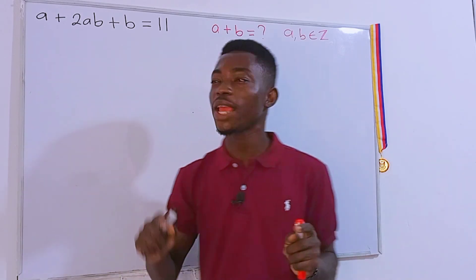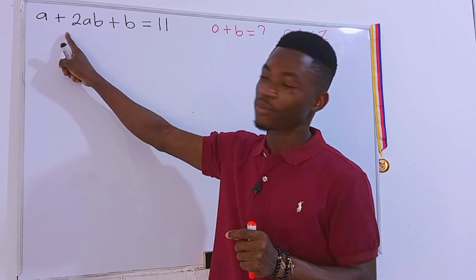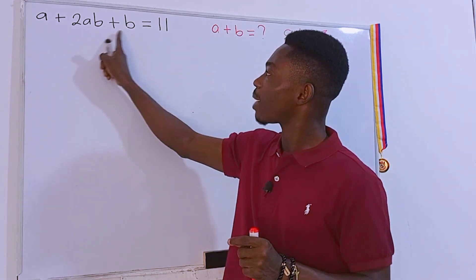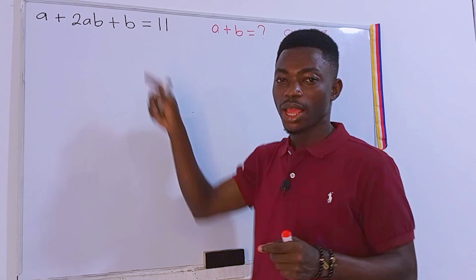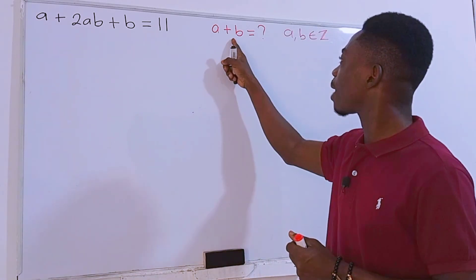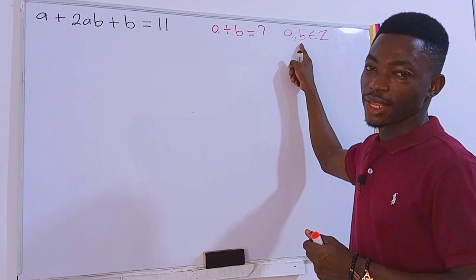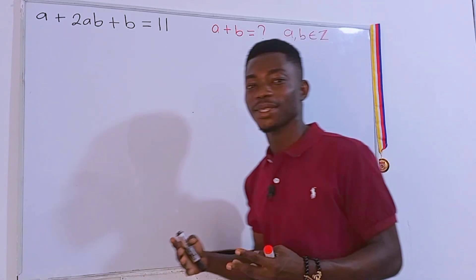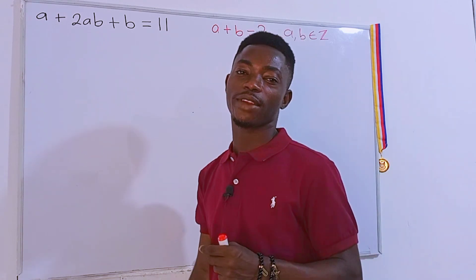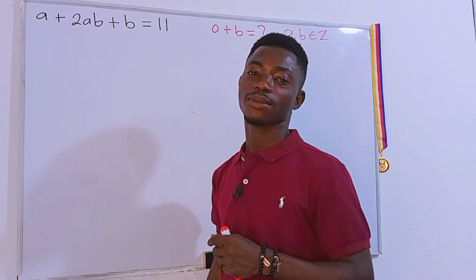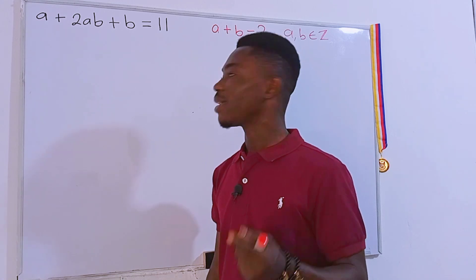Hello guys and welcome back. Today we have this question right here: a + 2ab + b = 11. We have to find the value of a + b where a and b are all integers. But before we start, feel free to pause the video and give it a try first. Are you done? Cool, now let's get started.